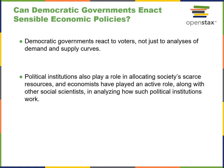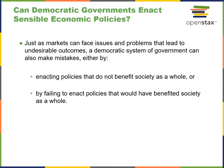Usually it's simply one ideology path versus another — in the case of Democrats and Republicans in the United States. Just as markets face issues and problems that lead to undesirable outcomes, democratic governments can also make mistakes by either enacting policies that do not benefit society as a whole, or failing to enact policies that would have benefited society as a whole.